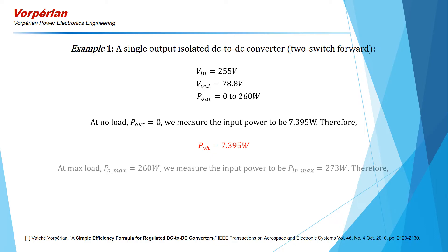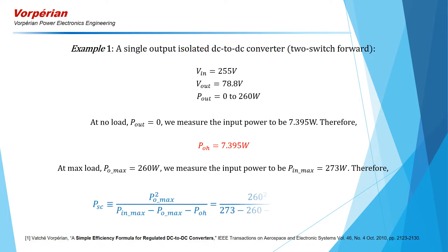Also on this converter, we measure at a maximum output power of 260 watts that the input power is 273 watts. Therefore, our second parameter PSC is computed according to this formula, and it turns out to be 11,755.47 watts — a mighty big number for a small converter.